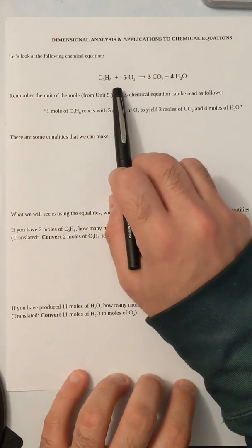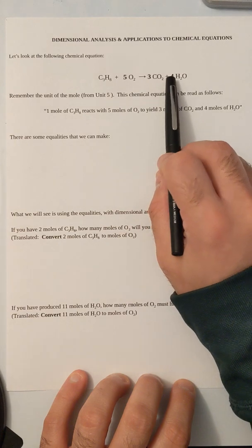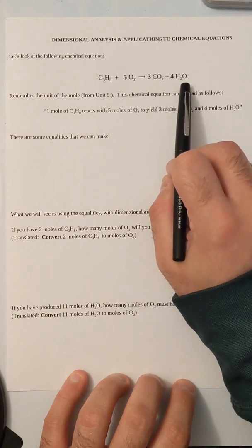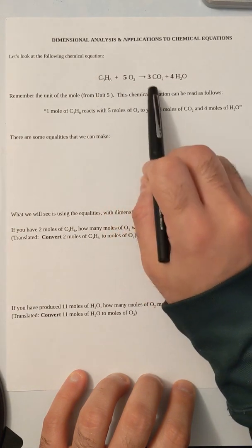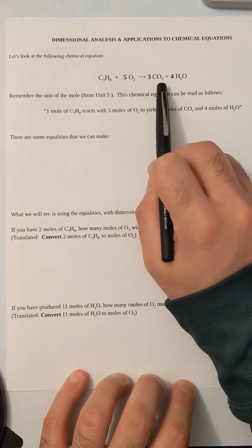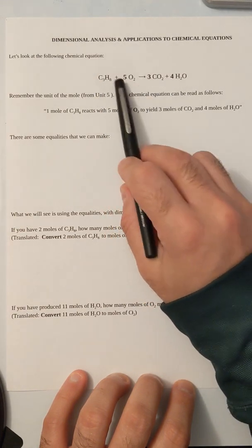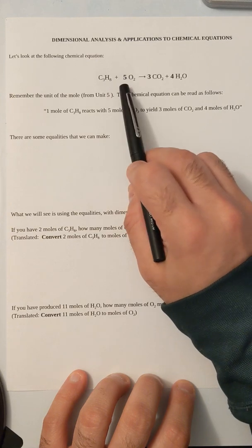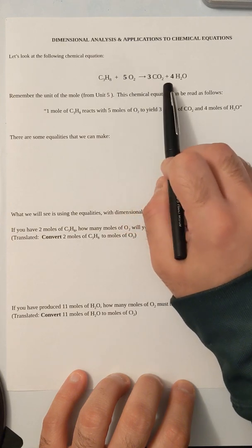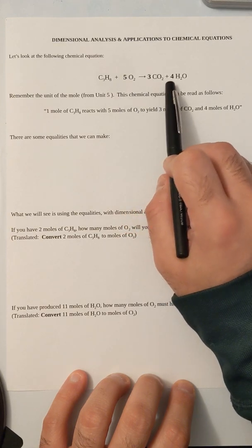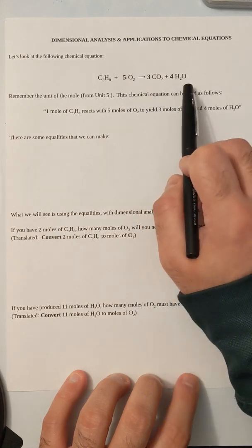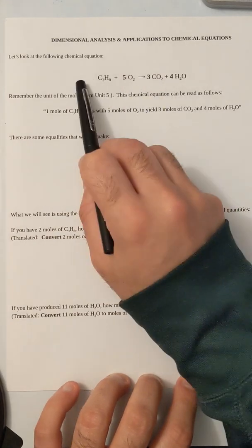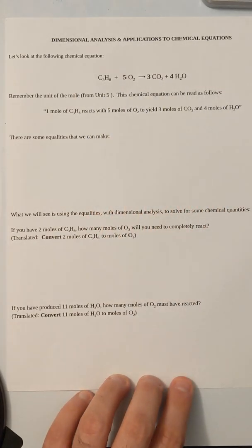There are 8 hydrogens — 4 times H2 is 8 hydrogens. 3 carbons on the left, 3 carbons on the right. Good. 10 oxygens on the left: 3 times 2 is 6, and 4 times 1 is 4, so it's 10 oxygens on the right. This is balanced.